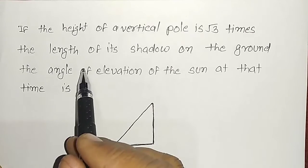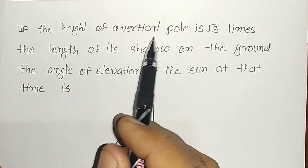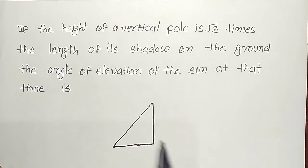The question says the length of its shadow on the ground, the height of the vertical pole is root 3 times. If the length of the shadow is x, so the height of the pole is root 3x.